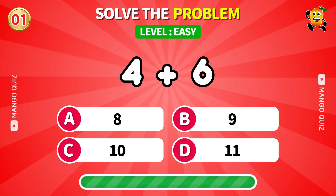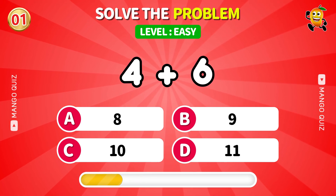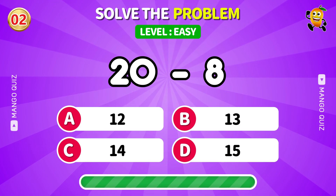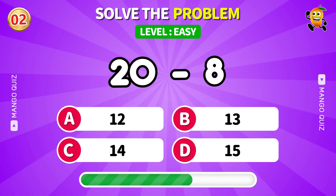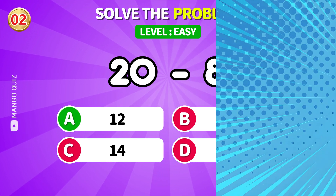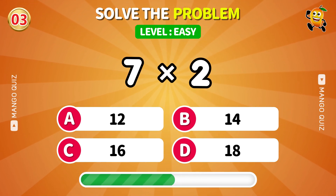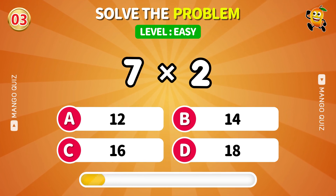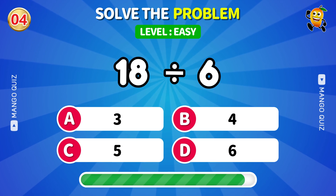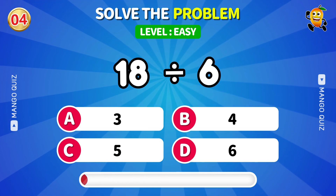Here is the first one: 4 plus 6. Answer: 10. Next: 20 minus 8. Answer: 12. Next: 7 times 2. Answer: 14. Next: 18 divided by 6. Answer: 3.